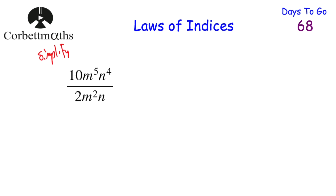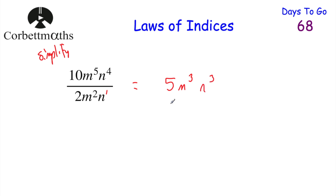Next question with division: simplify 10m to the power of 5 n to the power of 4 divided by 2m squared n. Press pause and try this. First, the numbers: 10 divided by 2 is 5. Then the m's: m to the power of 5 divided by m squared — subtract the powers — 5 take away 2 is 3, giving m cubed. Then the n's: n to the power of 4 divided by n to the power of 1 — subtract the powers — 4 take away 1 is 3, giving n cubed. So the answer is 5m cubed n cubed. If you got that, well done.